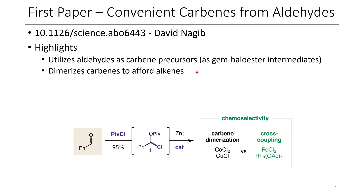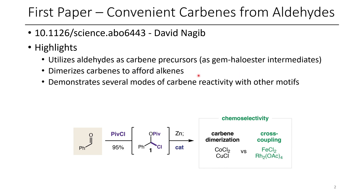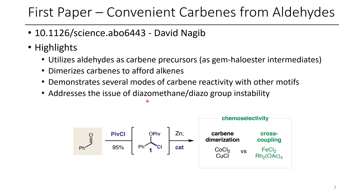They also take these carbenes and dimerize them to form alkenes. They also show that these carbenes can be used for most of the typical reactions carbenes can do, including the addition to amines, as well as the addition into alkenes, carbonyls, and imines. It also addresses the issue of diazo compound instability, as these compounds are much more stable than the diazo compounds.